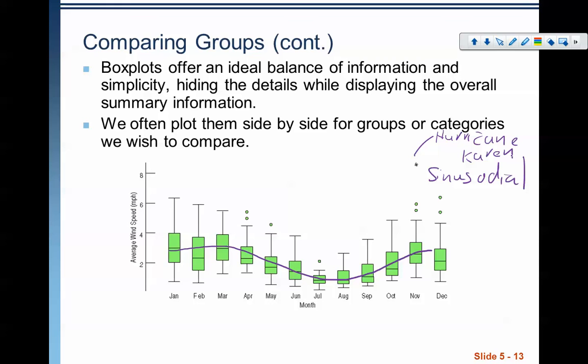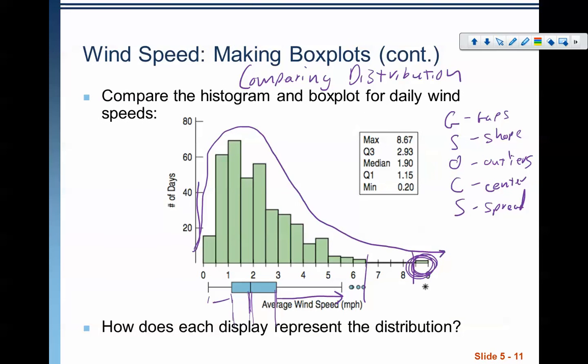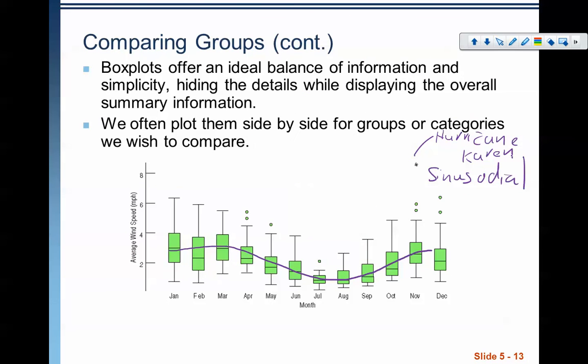But again, this side-by-side view of these box plots tells us a lot more information about that wind speed data. This original graph, you know, it just gives us something that's skewed to the right. We're not entirely certain how that breaks down throughout the year. We can't see the difference in spring months, summer months, fall months, and winter months in this graph. But as you break it down and make a box plot for each one, it tells us a lot more interesting information about the average wind speed.